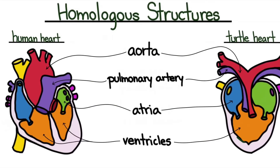We see homologous structures in a lot of different places as well. For example, the human heart and the turtle heart are shockingly similar. Again, perhaps these two anatomies developed randomly on their own, or maybe they share an origin.